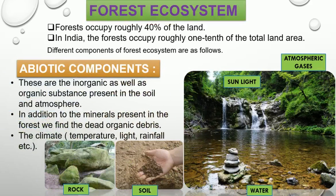The forest ecosystem is an example of the terrestrial ecosystem. Roughly 40 percent of the total land is occupied by forest. In India, roughly one-tenth of the total land is occupied by forest. The abiotic components of the forest contain soil, water and rock, and climatic factors such as temperature, sunlight and rainfall. Sunlight is necessary for plants for photosynthesis.